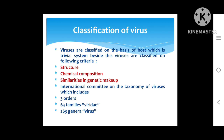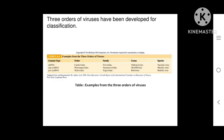Now we'll discuss the classification of viruses. Viruses are classified based on structure, chemical composition, and similarities in genetic makeup. The International Committee on Taxonomy of Viruses (ICTV) recognizes three orders, 63 families, and 263 genera. The 63 families end with the suffix '-viridae' and the 263 genera end with the suffix '-virus.'